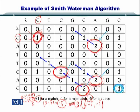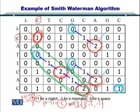So the traceback will go until you reach a 0 here, here. So essentially what this tells you is that there are 3 possible local alignments that exist in this matrix.